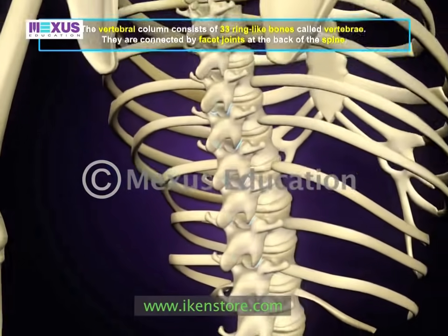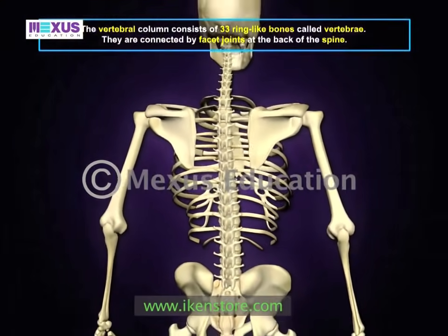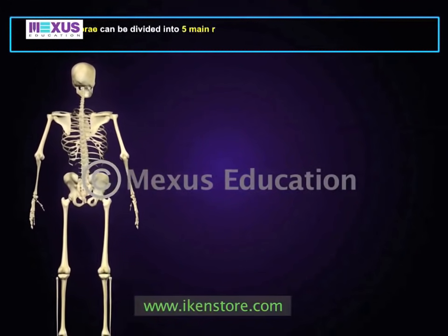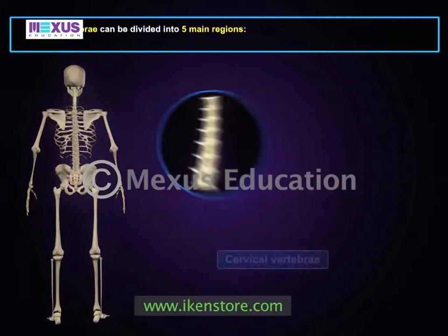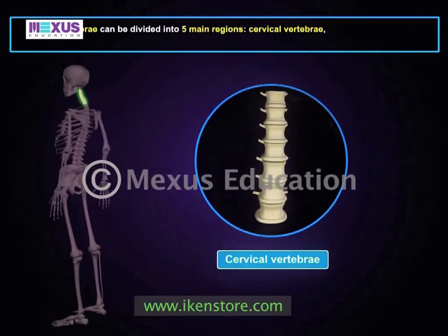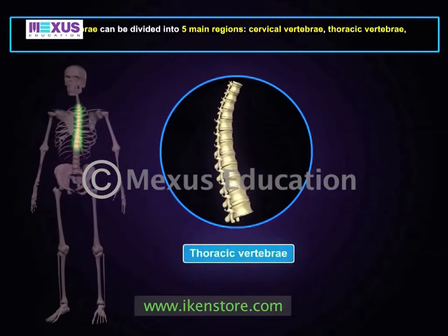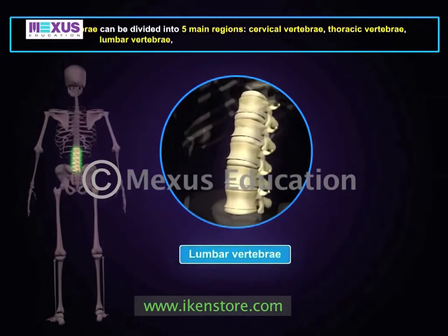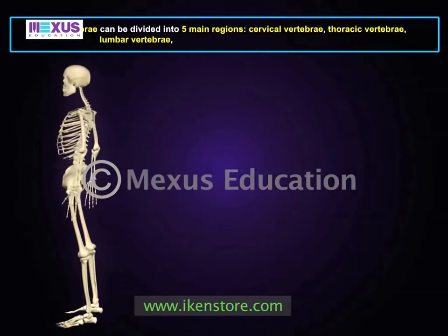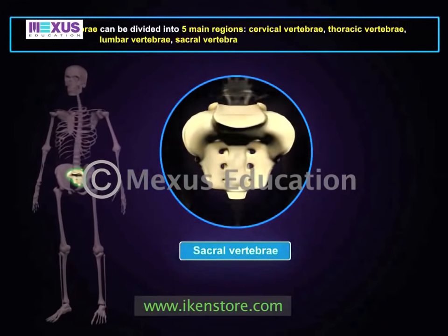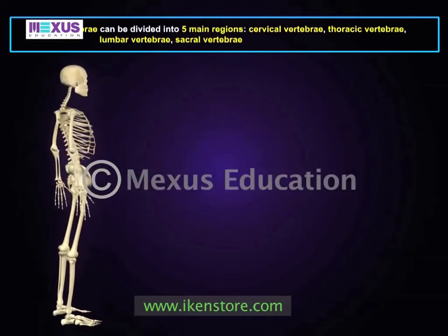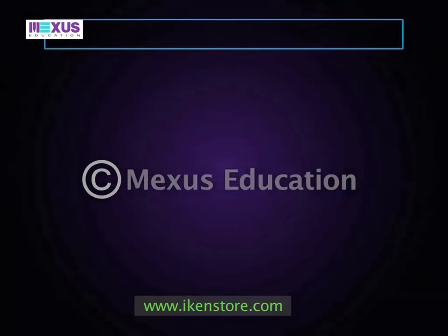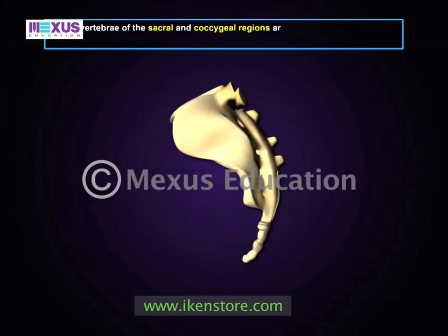The vertebral column consists of 33 ring-like bones called vertebrae, connected by facet joints at the back of the spine. These joints allow movement between the bones of the spine. The vertebrae can be divided into five main regions: seven cervical vertebrae, twelve thoracic vertebrae, and five lumbar vertebrae.